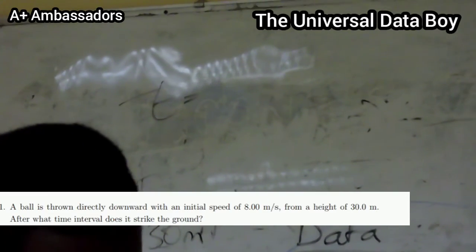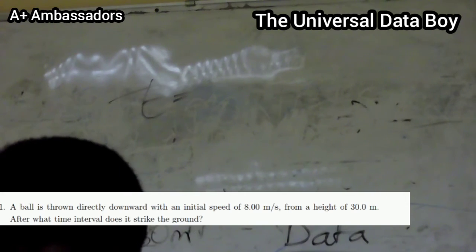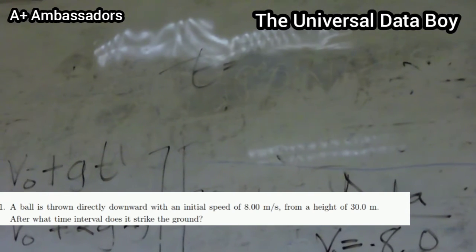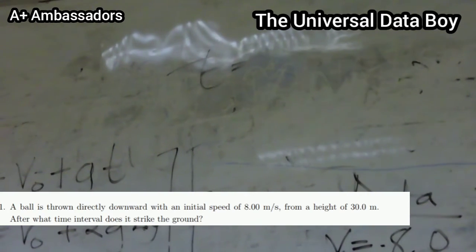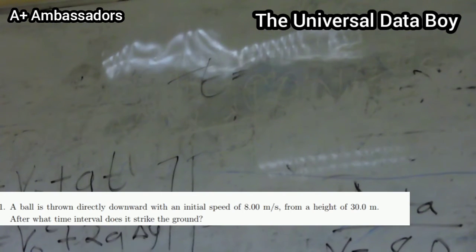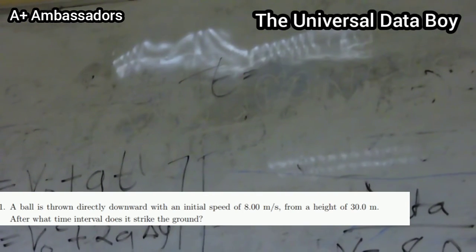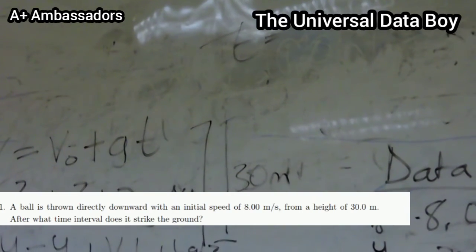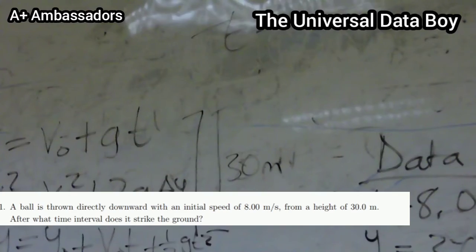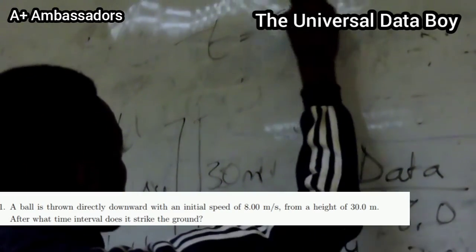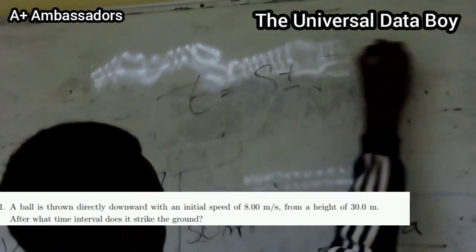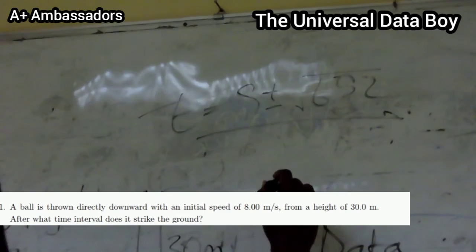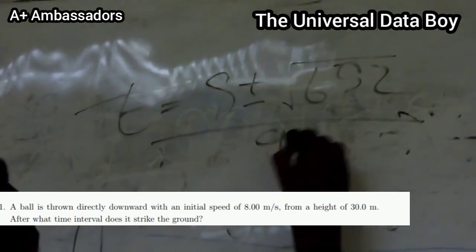We are going to use our calculator. We have 64 minus 4 times -4.9 times 30. So we are going to have 652.